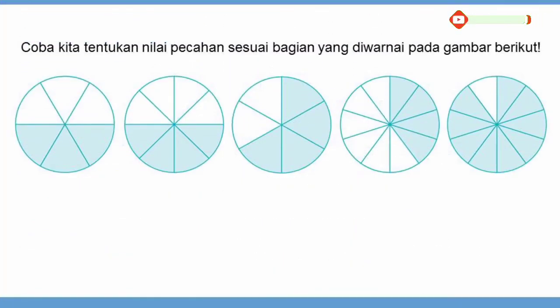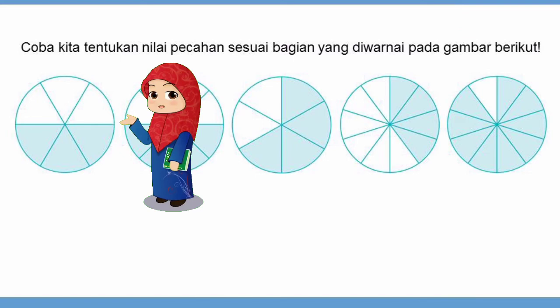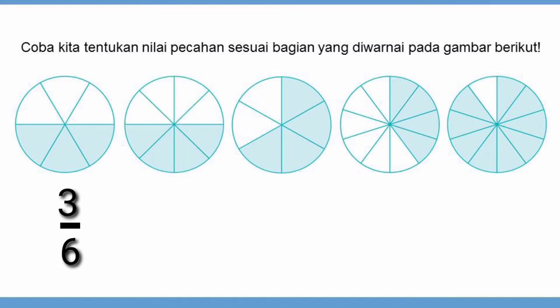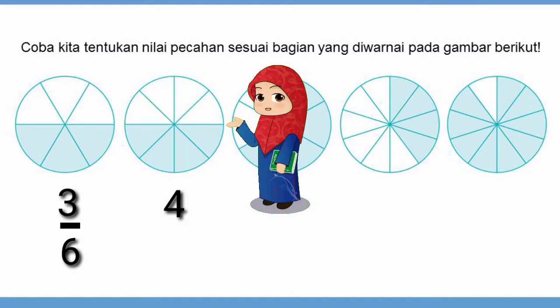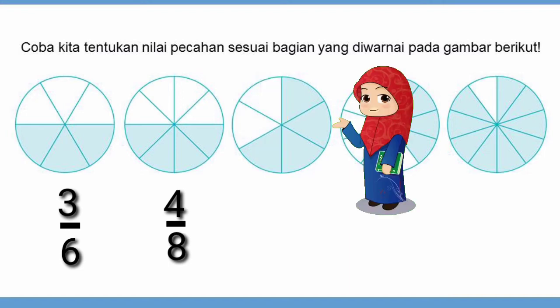Coba kita tentukan nilai pecahan sesuai bagian yang diwarnai pada gambar berikut. Gambar pertama, seluruhnya ada 6 bagian dan 3 bagian yang diarsir, berarti 3 per 6. Gambar kedua, seluruhnya ada 8 bagian dengan 4 bagian yang diarsir, jadi 4 per 8. Gambar ketiga, ada 6 bagian dengan 4 bagian yang diarsir, jadi 4 per 6.